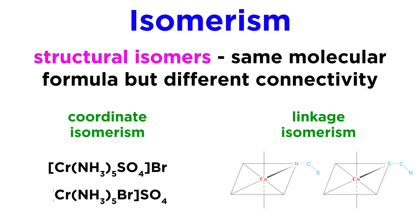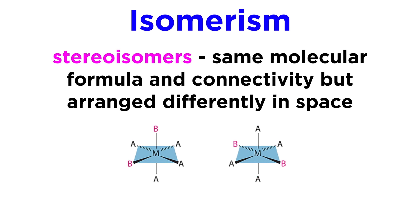In linkage isomerism, the composition stays the same, but the point of attachment for one or more ligands differs. Certain ligands can coordinate from different atoms, like the thiocyanate ion, which can coordinate from either the nitrogen or the sulfur, or the nitrite ion, which can coordinate from either the nitrogen or one of the oxygens.